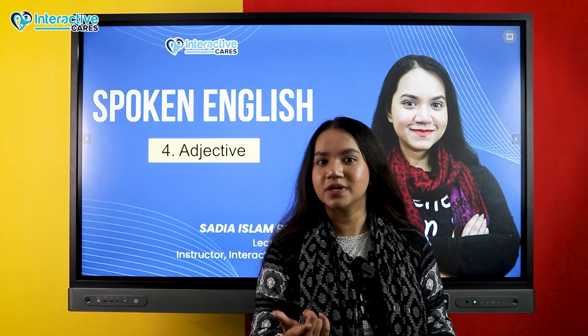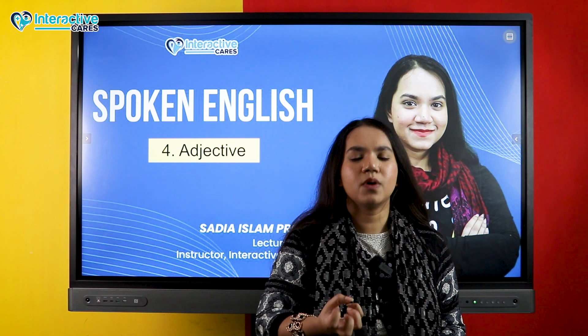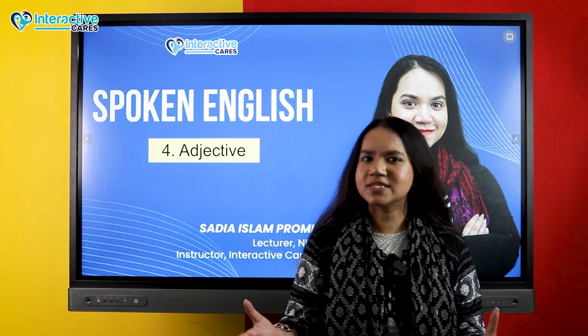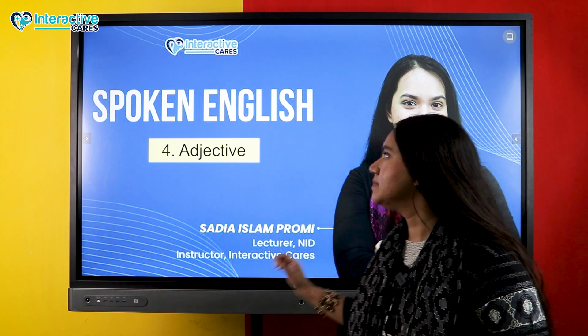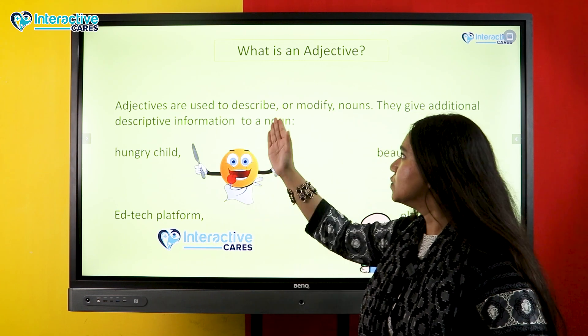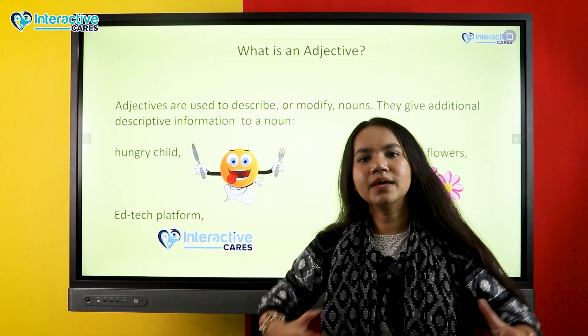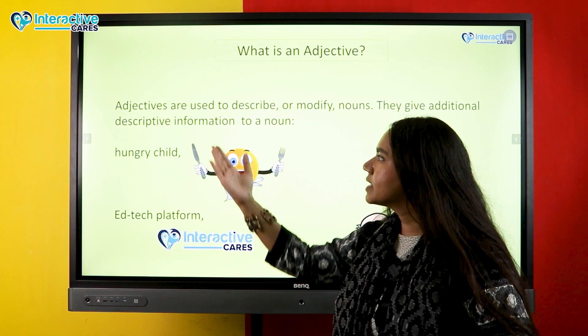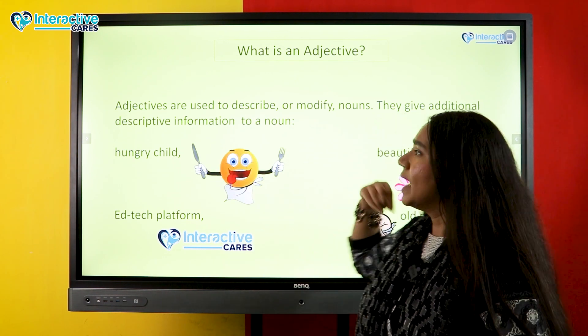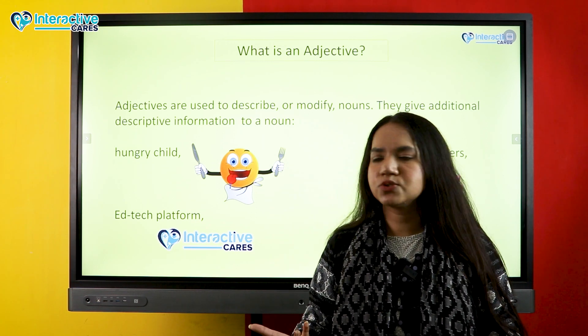In this sentence, what is the noun? 'Video' is a common noun. The adjective describes or modifies that common noun. The word 'English' describes the noun 'video,' so it is an adjective. So, an adjective is the word used to describe or modify nouns — it gives additional descriptive information to a noun.